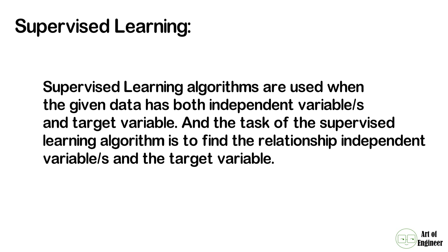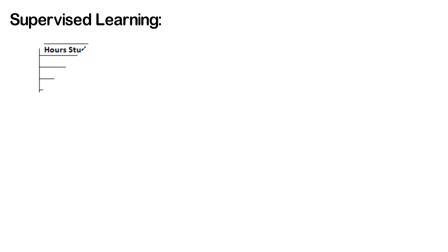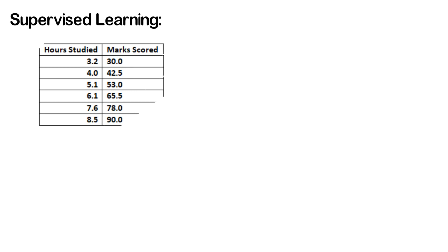Let's try to understand this with a simple example. Let's assume we have some data about the hours studied by students and the marks scored by them in the exam. Here the hours studied is the independent variable and marks scored is the target variable.